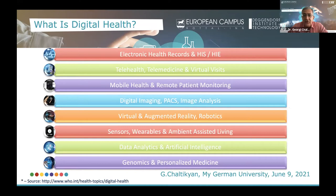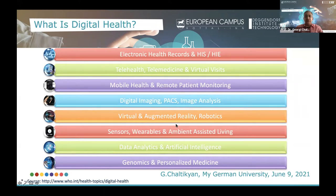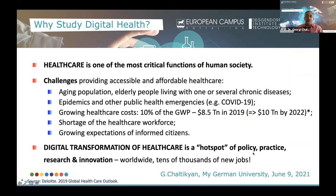You can see on this slide that the scope of digital health is rather broad. It includes electronic health records and health information systems, telehealth, telemedicine, mobile health or remote patient monitoring, digital imaging, virtual augmented and mixed reality, robotics, enhanced interventions in medicine, sensors, wearables, ambient assisted living, data analytics and artificial intelligence, and the upcoming future of medicine — genomics and personalized or precision medicine.